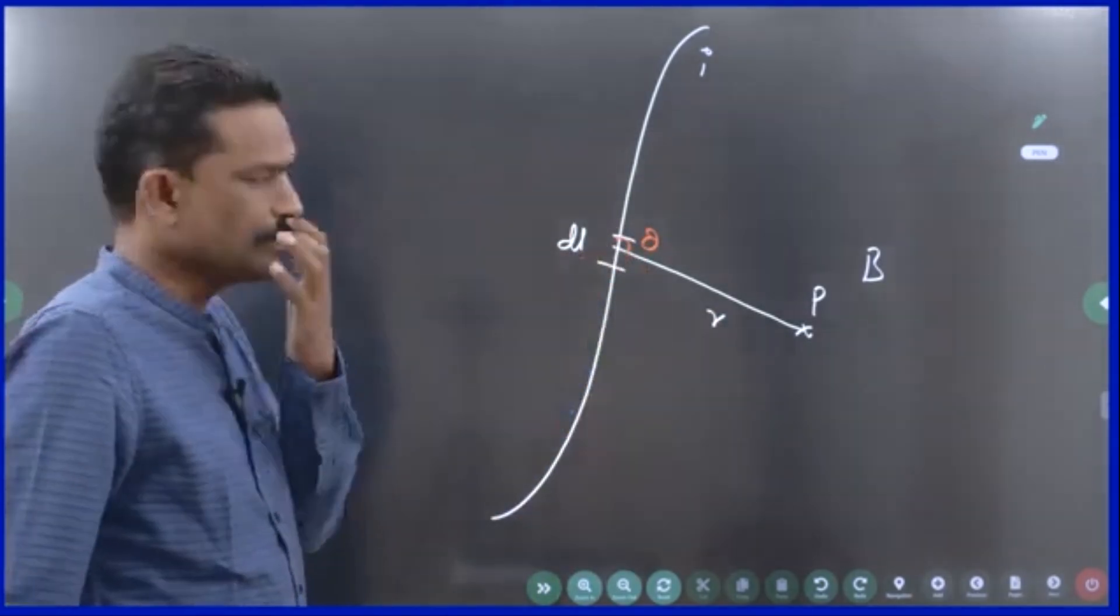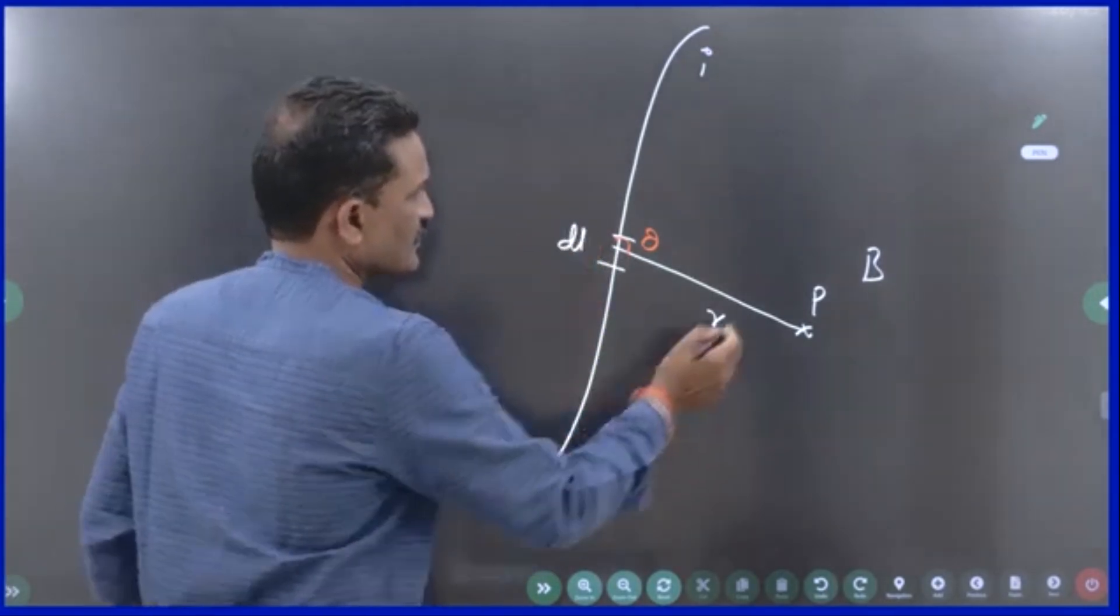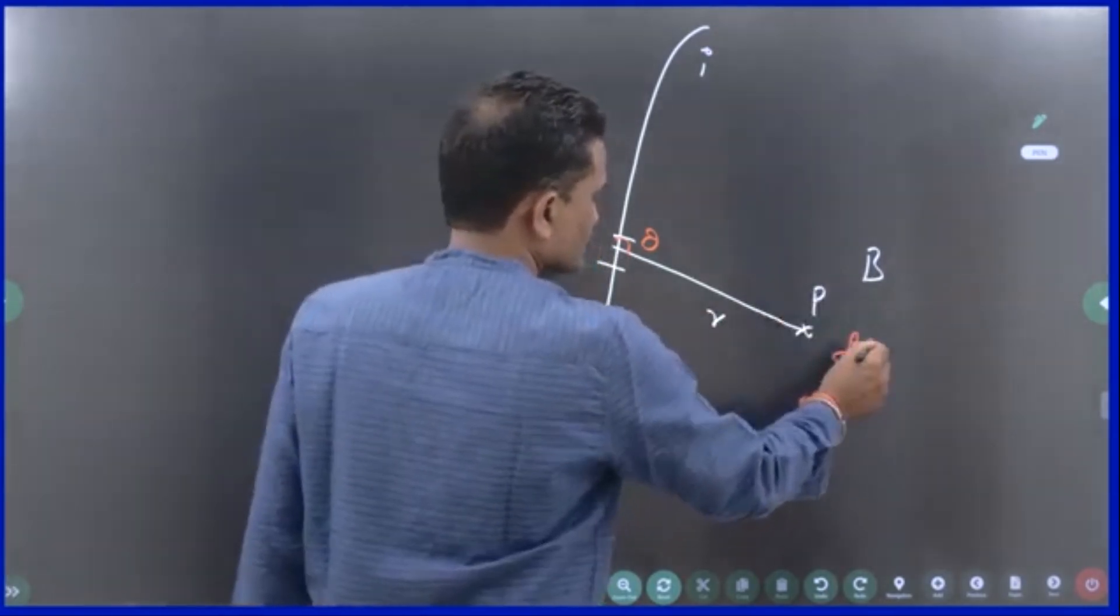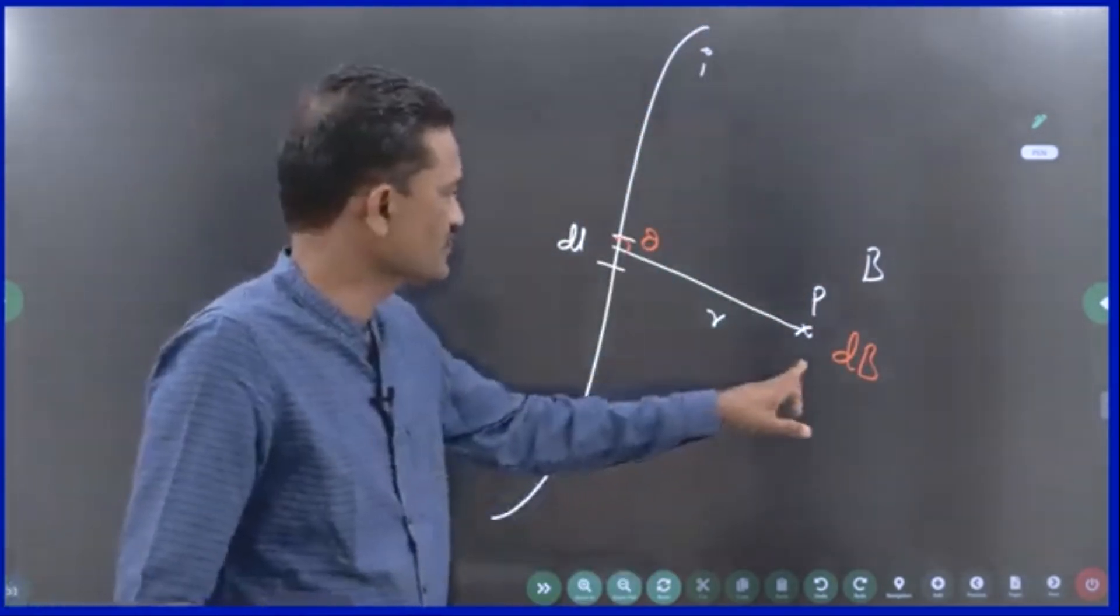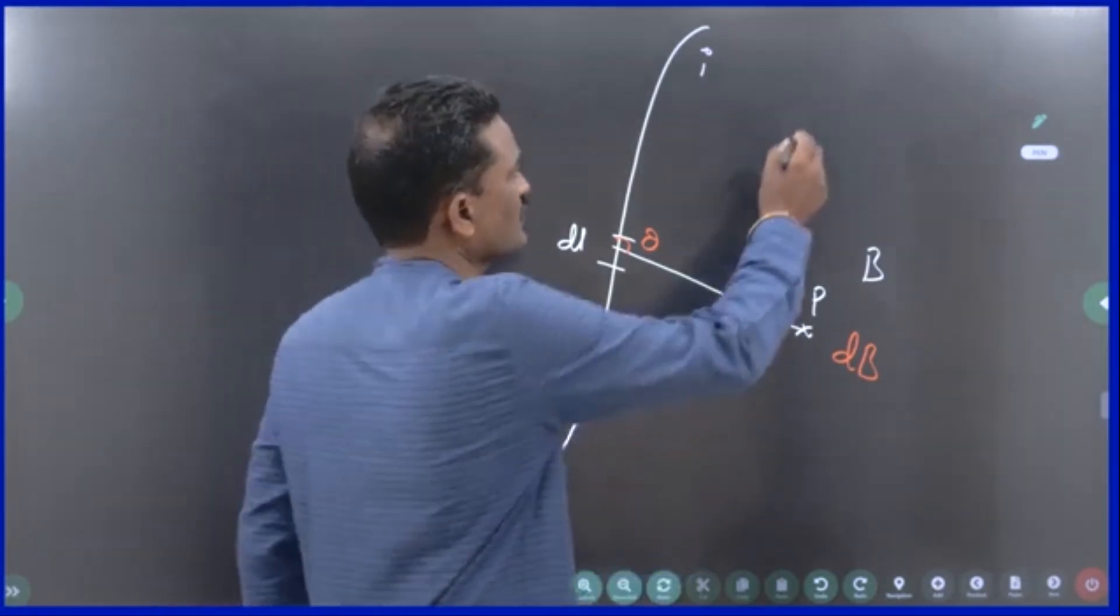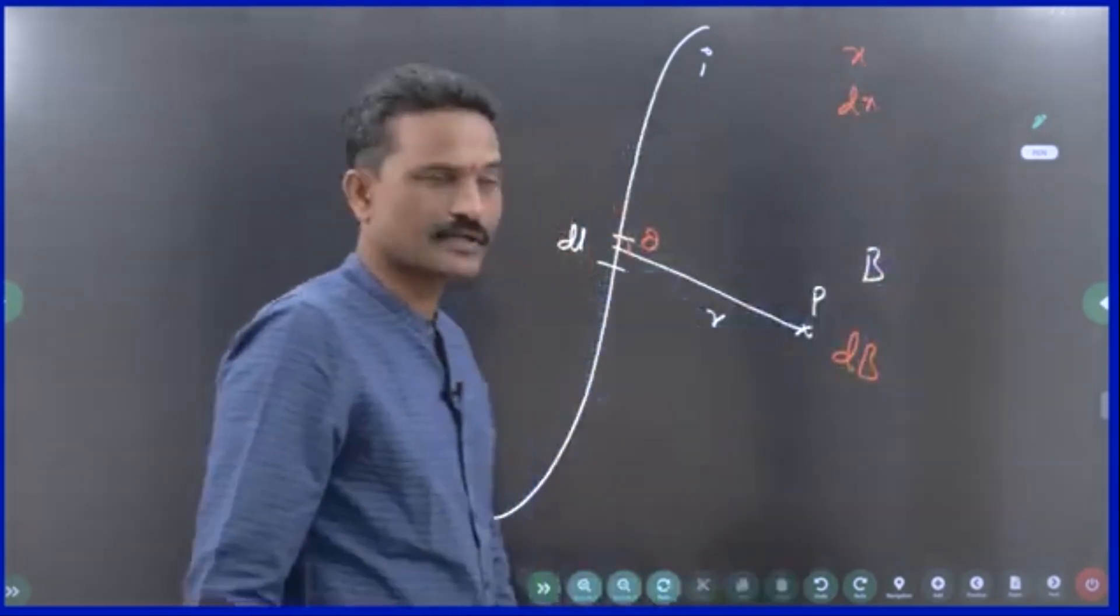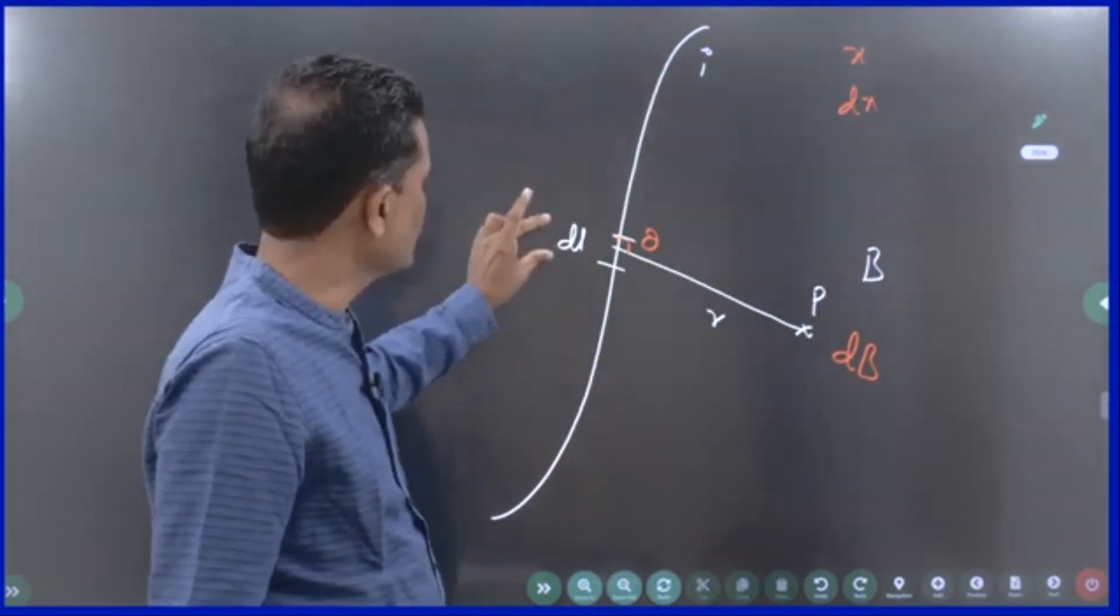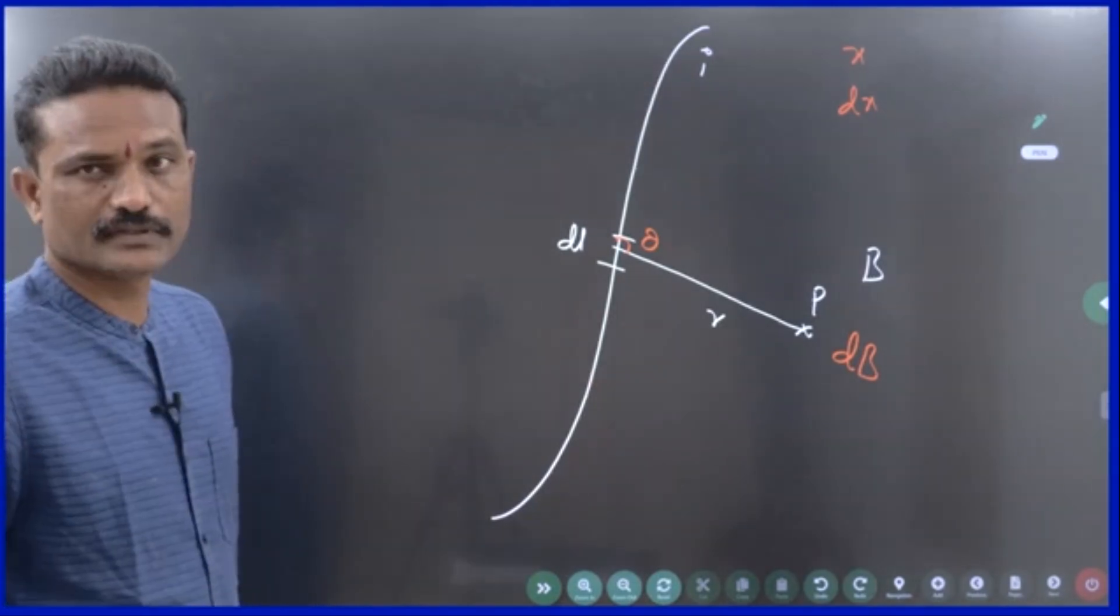Then, the magnetic field due to only this small element, let us say dB. Due to all wire is B, due to a small part of the wire is dB. Generally, if something is big X, small part of this will be dX, like total length is L and small part is dl.